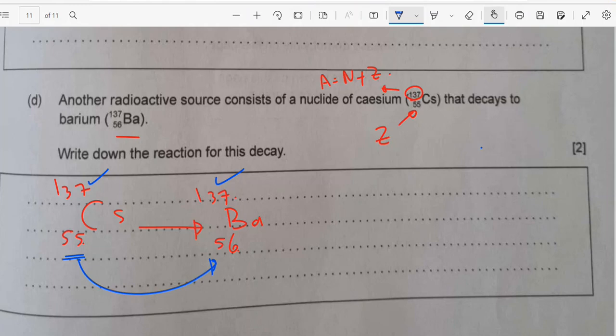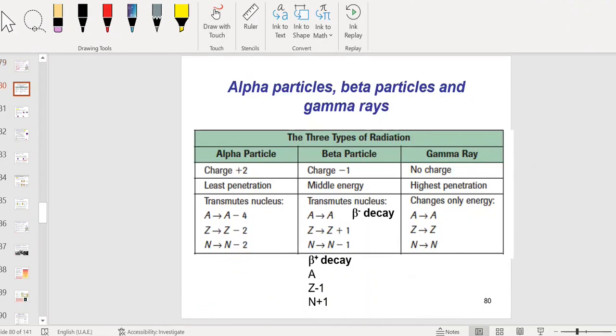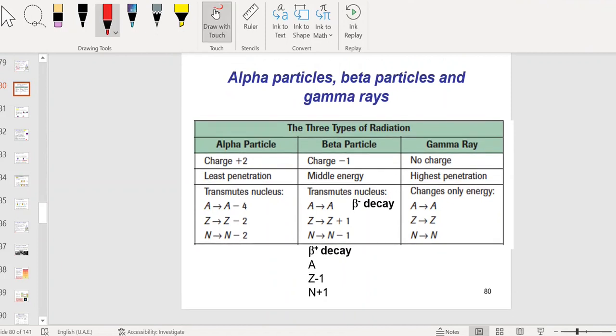If you just refresh your memory a little bit: we said if the particle is alpha particle, the atomic number, the number of protons and electrons will be reduced by 4. The number of protons Z will be reduced by 2. So it's not alpha particle because the atomic number, the number of protons and electrons, they're the same.